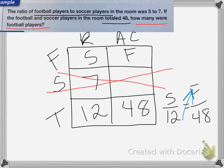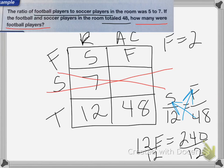We do cross products and I end up with 12F equals 240 because I do 48 times 5. Divide both sides by 12, and I end up with 20 football players. And that's it for this lesson.